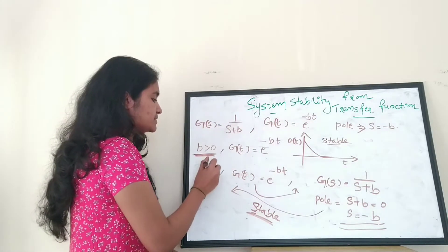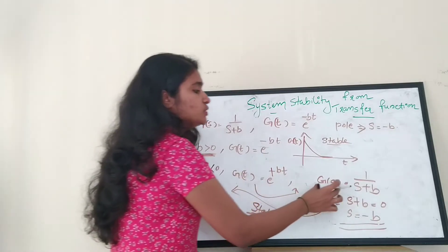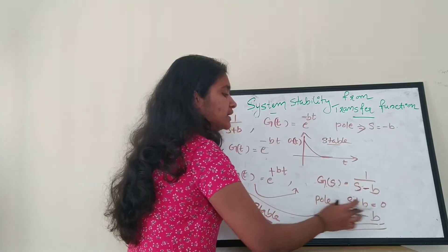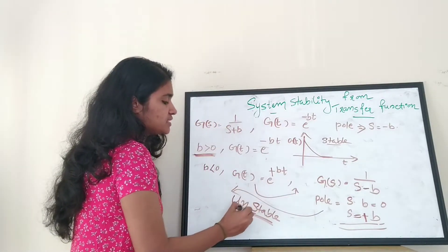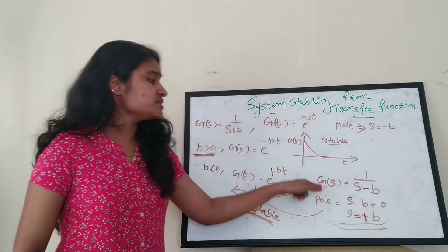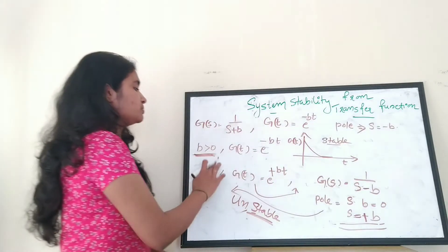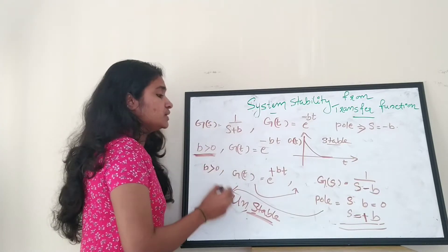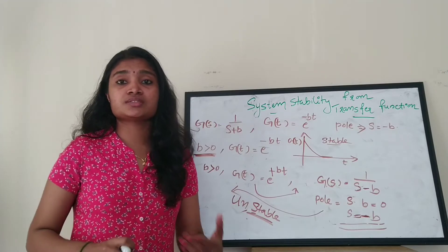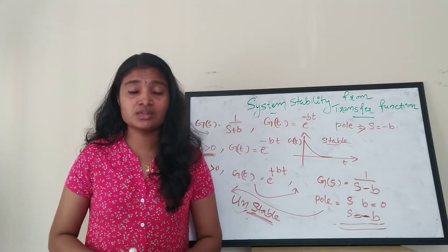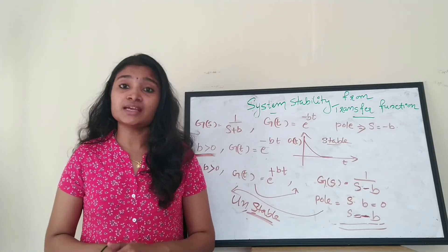For an unstable system, b is less than zero, so the system function is e^(+bt), G(s) = 1/(s-b), and the pole is s = +b, which is positive. When the pole is positive, the system is unstable. In summary: when your pole is negative, your system is stable. I hope you understood what stability is and how to identify it from the poles of the transfer function. Please share this video and subscribe to the channel.